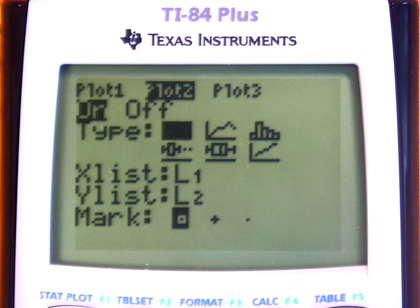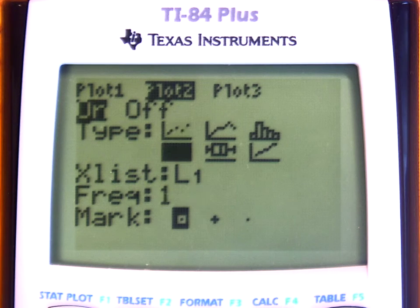I will press my down arrow and I will also select the same type. But I want to simultaneously graph Babe Ruth's data as well. So if I press the down arrow, I will press second two in order to change to list two.